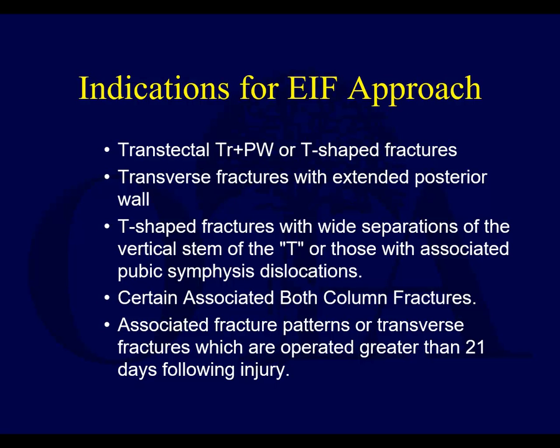If there's a transverse fracture with an extended posterior wall, you possibly may need to use this — if you have a posterior wall that you just can't get with a Kocher-Langenbeck and trochanteric flip. This is potentially an approach you can consider. You can also consider what's called a tri-radiate approach, which is something you can convert a Kocher-Langenbeck to. T-shaped fractures with wide separation of the vertical stem of the T, or those with associated pubic symphysis dislocations, is a possible indication for this.